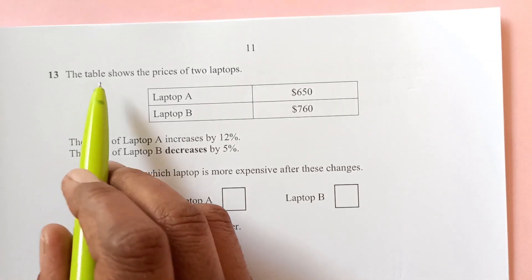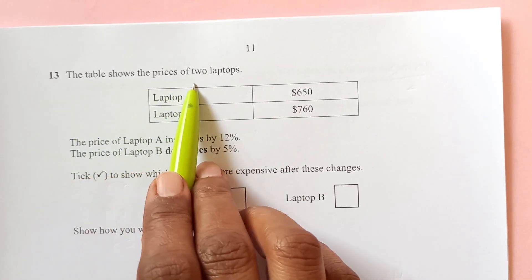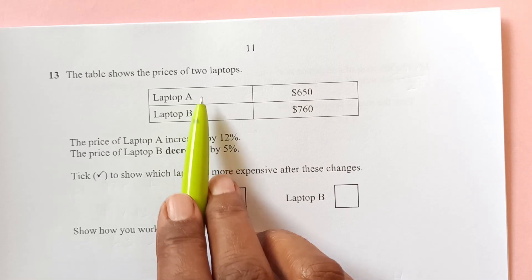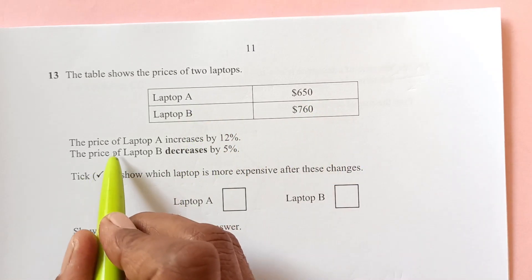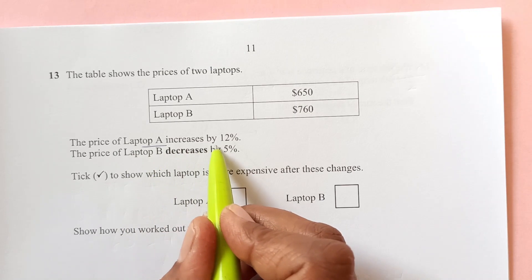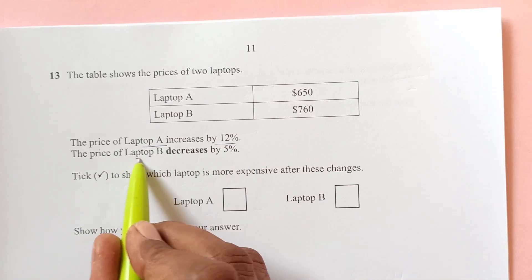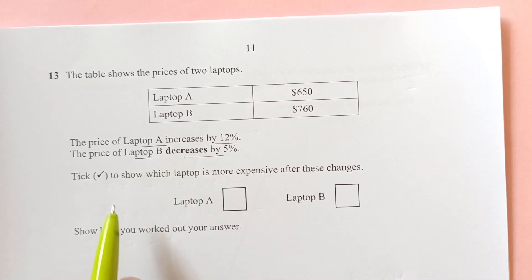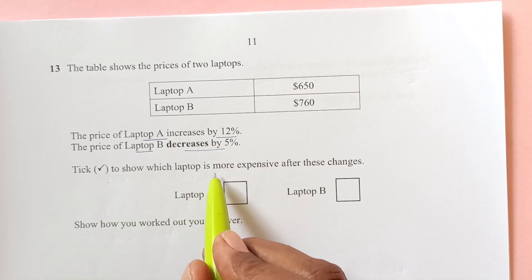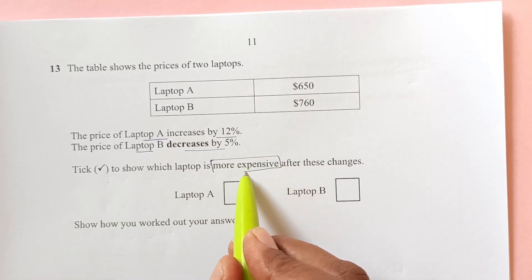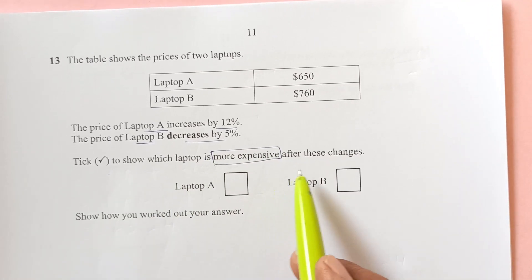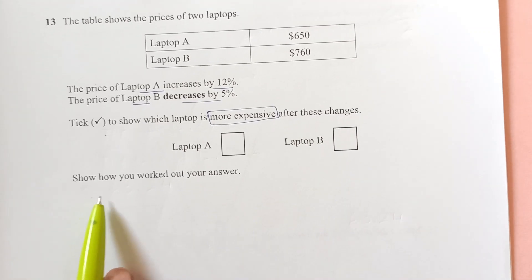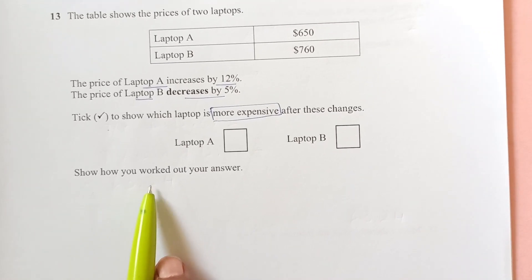Question number 13, we have here the table shows the price of two laptops. Here we have laptop A, laptop B. Here are the prices. The price of laptop A increases by 12%. The price of laptop B decreases by 5%. Tick to show which laptop is more expensive after these changes. Show how you worked out your answer.